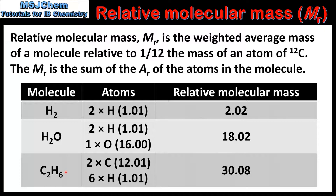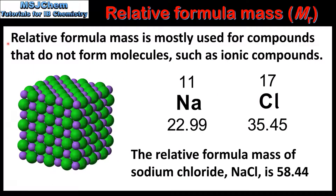And finally we have C2H6, which is ethane. A molecule of ethane is composed of two carbon atoms and six hydrogen atoms. If we add up the Relative Atomic Masses of the atoms we get a Relative Molecular Mass of 30.08. Note that like Relative Atomic Masses, Relative Molecular Masses do not have units.